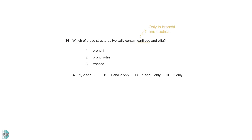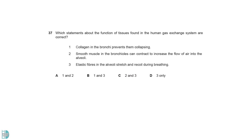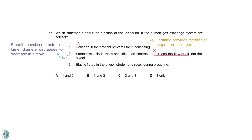Only the bronchi and trachea contain cartilage. All three structures contain cilia, but the bronchiole has very few of them. One is incorrect because the structure in the bronchi that provides mechanical support is the cartilage, not the collagen. Two is incorrect because when smooth muscle contracts, the lumen diameter decreases, resulting in a decrease in airflow. Three is correct — it allows alveoli to expand and increase the volume of air and recoil to force the air out.